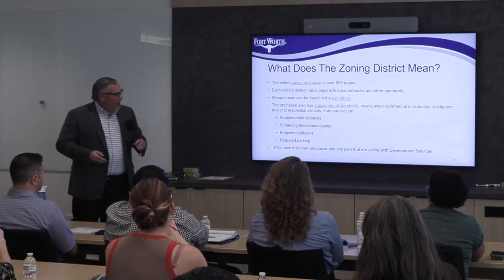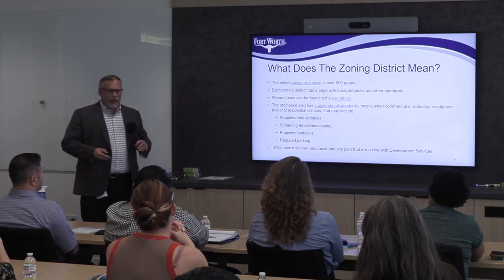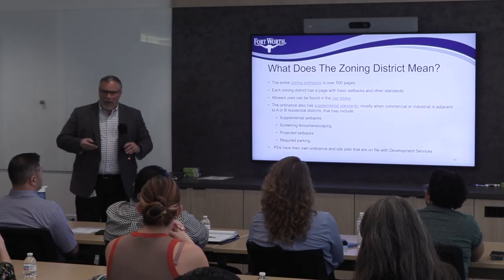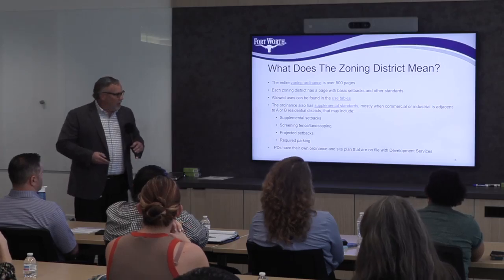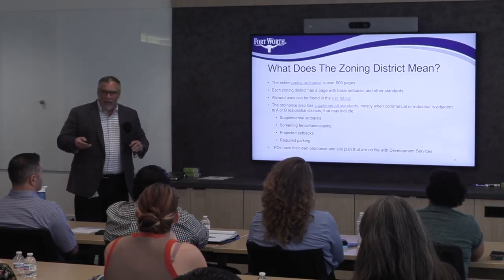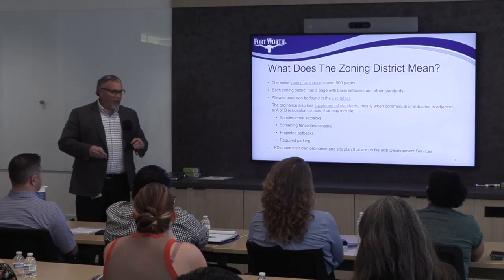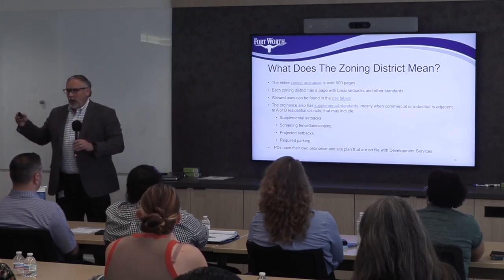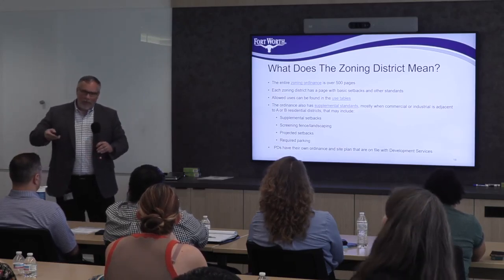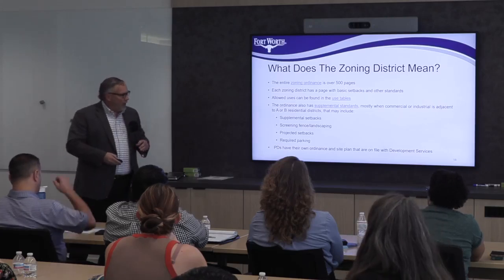So what does the zoning district mean? We have lots of different tools you can use. We have a zoning ordinance — it's over 500 pages and sometimes difficult to peruse through. We also have a land use table. And we have supplemental standards for some of our uses — for example, an automotive use can't just go right next to residential because automotive uses can be noisy, so supplemental standards help alleviate that.